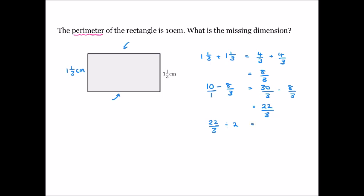Since the two remaining sides are equal, we halve twenty-two thirds. Because the numerator is even, we simply halve it: half of twenty-two thirds is eleven thirds. Converting to a mixed number: eleven divided by three is three with a remainder of two, so the missing dimension is three and two thirds centimetres. That completes our lesson on adding and subtracting fractions.